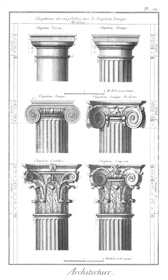Trefoiled arch: an arch pointed at the top formed by voussoirs whose inside radius is greater than one half the span of the arch. Tracery: the stonework elements that support the glass in a Gothic window.